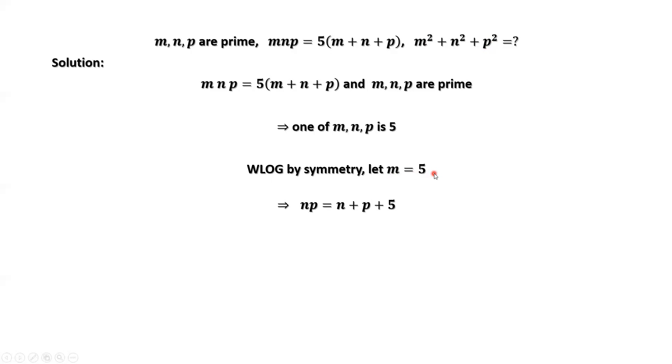If m equals 5, dividing by 5 on both sides of this equation, then subtracting n and p from both sides, we have np minus n minus p equals 5.